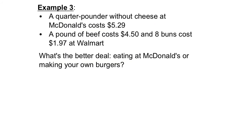The last example deals with going out to eat versus staying at home. Looking at McDonald's, a quarter pounder without cheese costs $5.29. From the grocery store, a pound of beef costs $4.50 and eight buns cost $1.97. Right now it's not a fair comparison because McDonald's gives one hamburger, while the store items are a whole pound of beef and eight buns — so we need to find the price per hamburger.